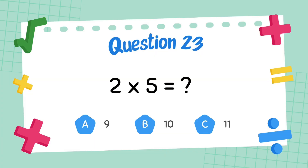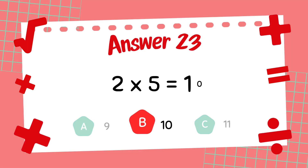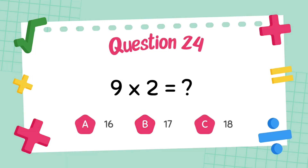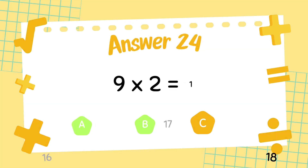What is 2 multiply 5? The answer is 10. What is 9 multiply 2? The answer is 18.